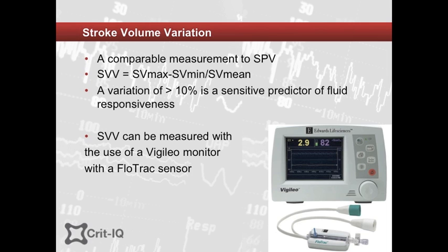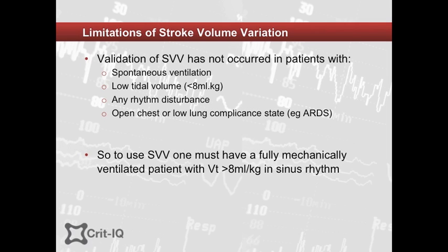Significant variation with respiration suggests that the patient is operating on the upslope of the Starling curve. A stroke volume variation greater than 10% suggests that the patient responds positively to fluids. In the absence of limitations, stroke volume variation is a good predictor of fluid responsiveness. Limitations include that this measure has not been validated in spontaneous breathing, small tidal volumes (less than 8 ml/kg), arrhythmia, or open chest patients.